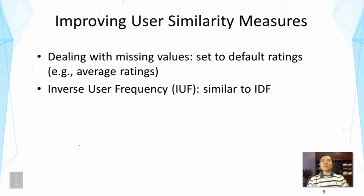There are some obvious ways to improve this approach. Mainly we want to improve the user similarity measure, and there are practical issues to deal with. For example, there will be a lot of missing values. What do you do with them? You can set them to default values or the average ratings of the user—that would be a simple solution.